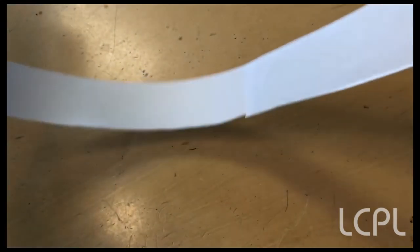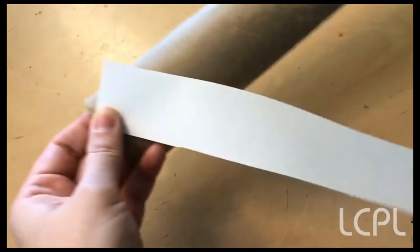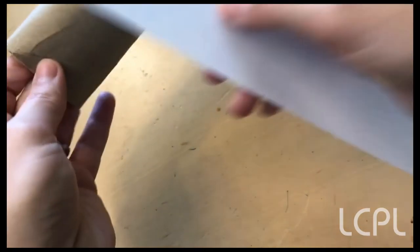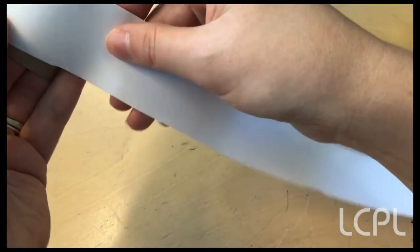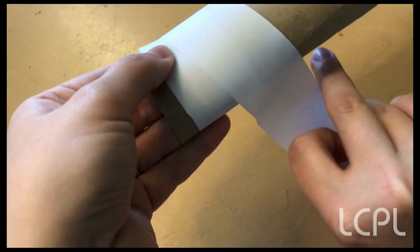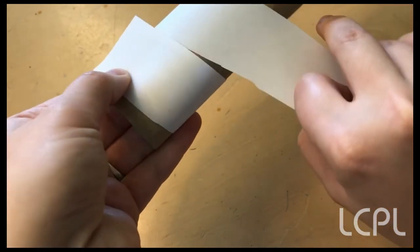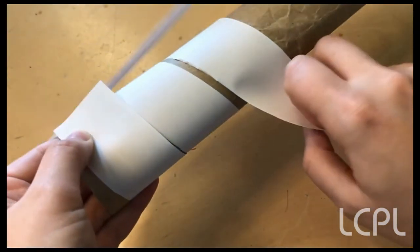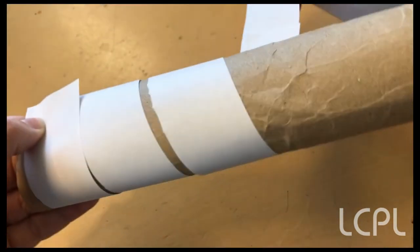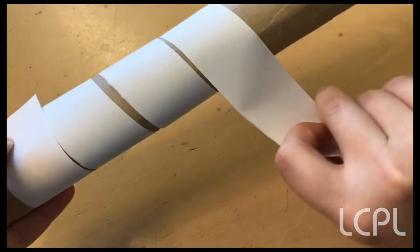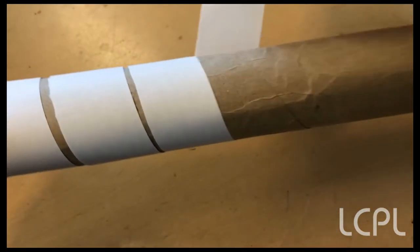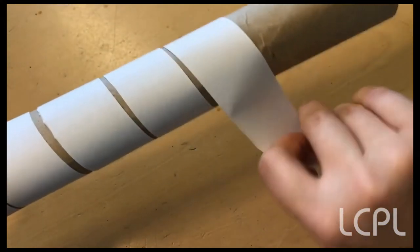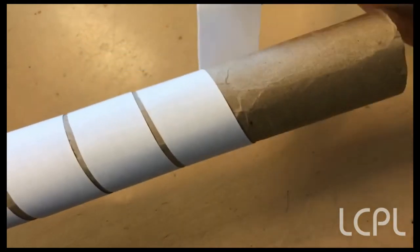Now that we have our longer scroll and our tube, we can start the assembly. So when you wrap your scroll around your tube, make sure that you're not overlapping. You don't want to overlap the paper. You want it to be right next to each section, like this, so that there's no overlap. You're just right next to each other.